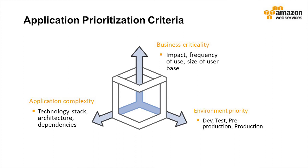Application complexity can be characterized by technology stack, architecture, or dependencies between an application and the underlying infrastructure, or dependencies among multiple applications. Along this dimension, applications with the least complexity may be migrated first.